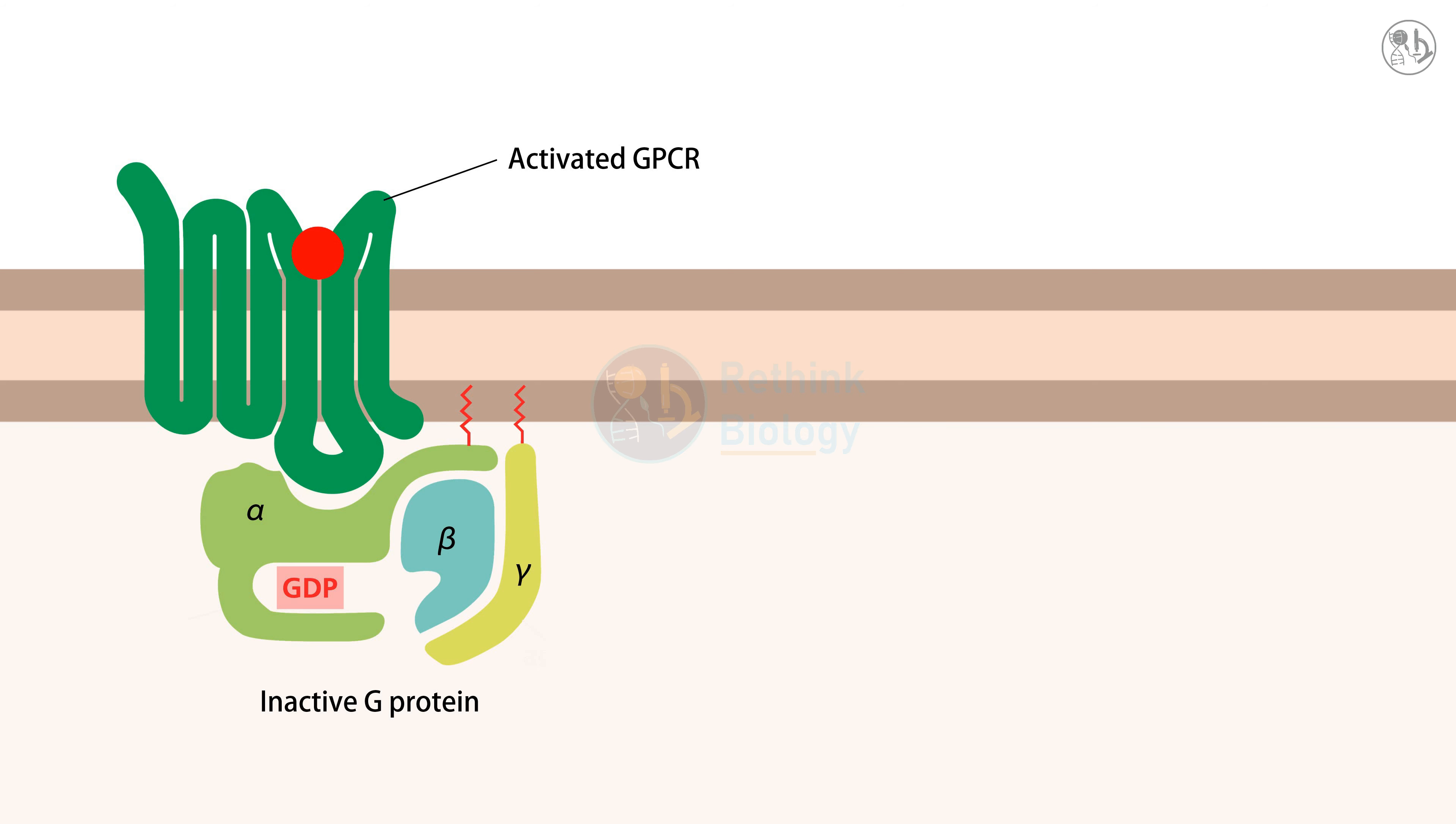The AH domain of the G protein alpha subunit moves outward to open the nucleotide binding site, thereby promoting dissociation of GDP allowing GTP to bind in its place.